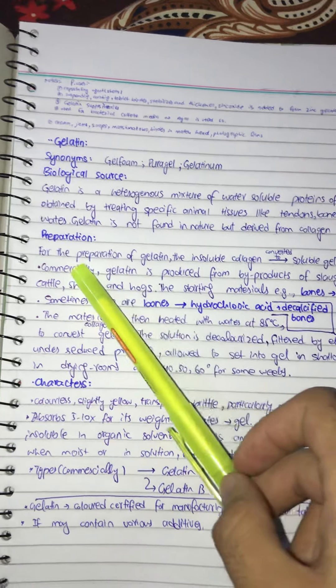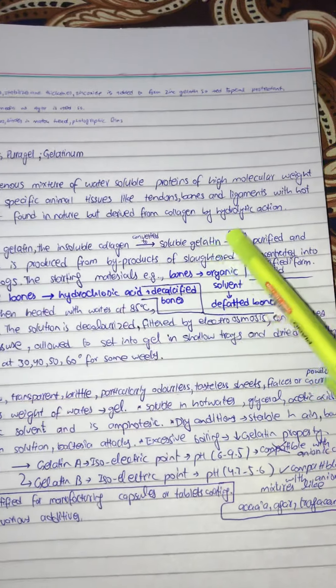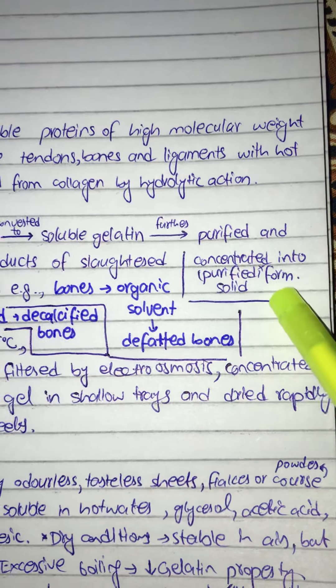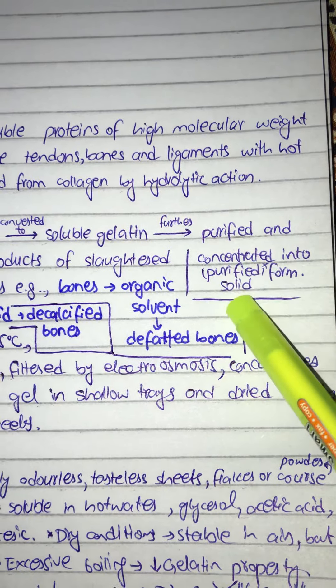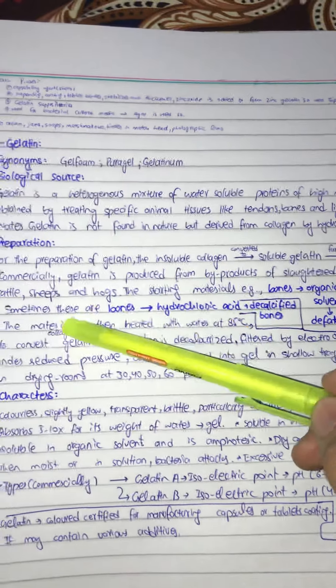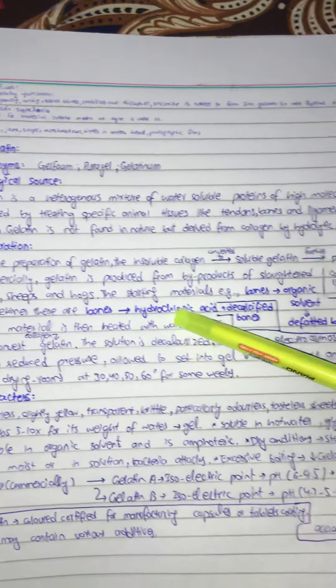For the preparation of gelatin, the insoluble collagen is converted into soluble gelatin and further purified and converted into its purified solid form. Commercially, gelatin is produced from bioproducts of slaughtered sheep, hogs, and cattle. The starting materials are bones that will be treated by organic solvent and converted into defatted bones.